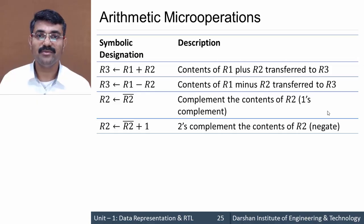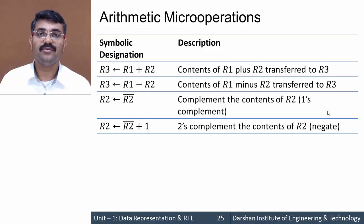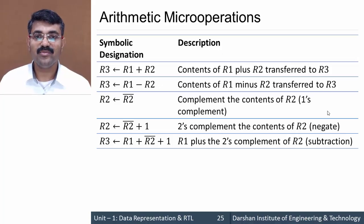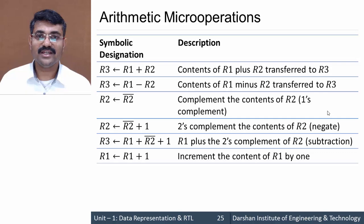We are already aware that the negative number in the binary number system is represented by the 2's complement of the original number. So the next operation is r3 = r1 + r2' + 1, where r1 plus the 2's complement of r2 is nothing but r1 minus r2 — that is the subtraction operation.